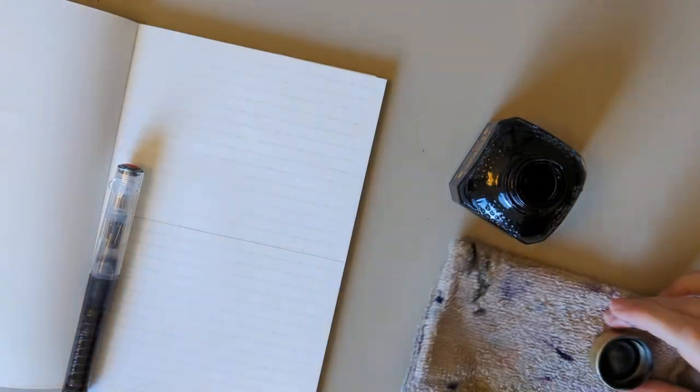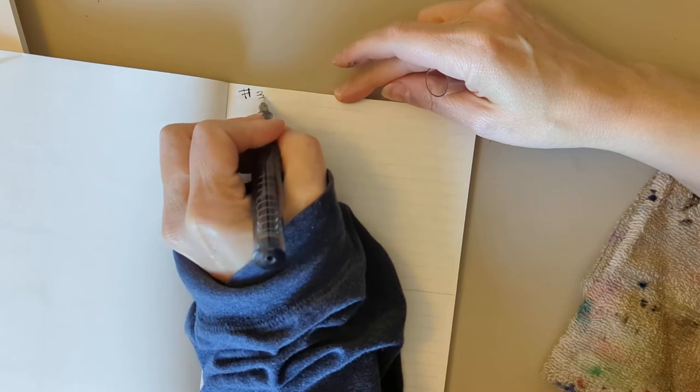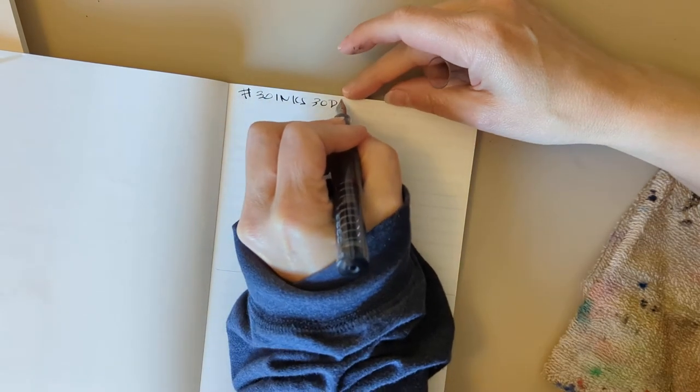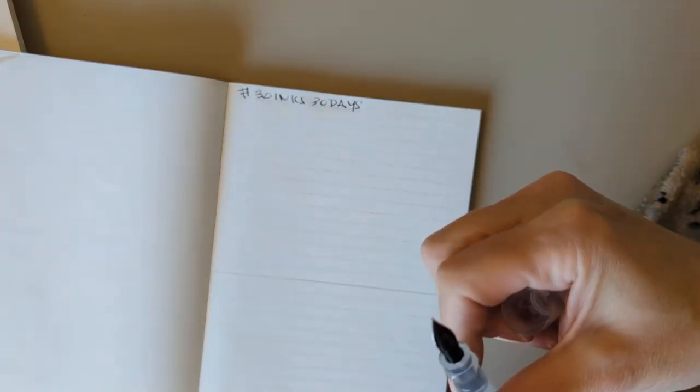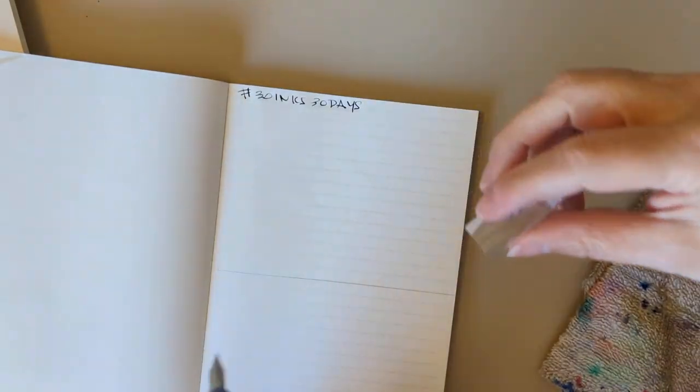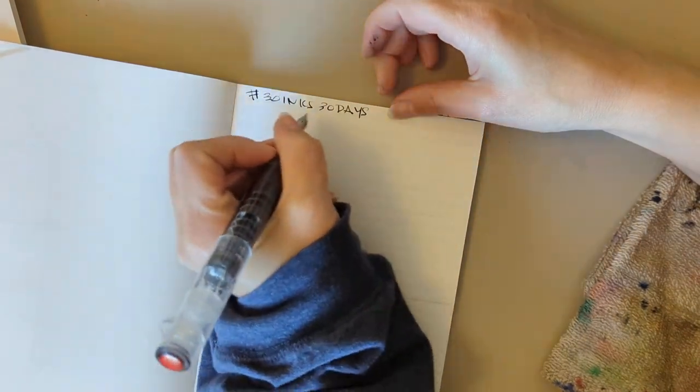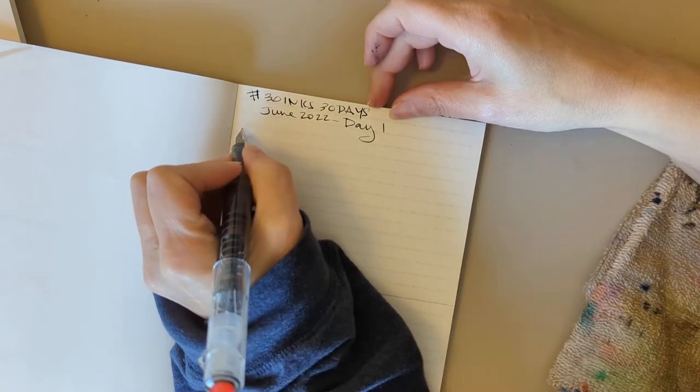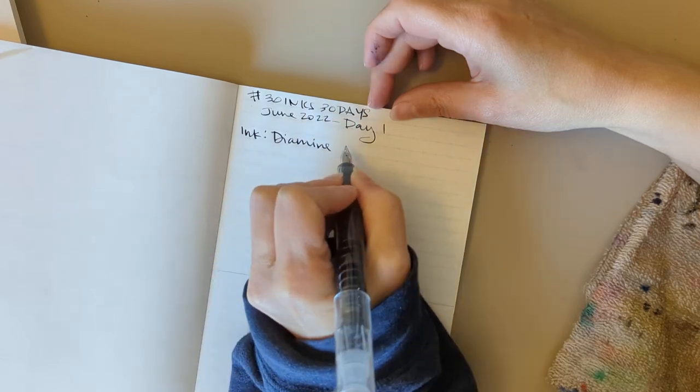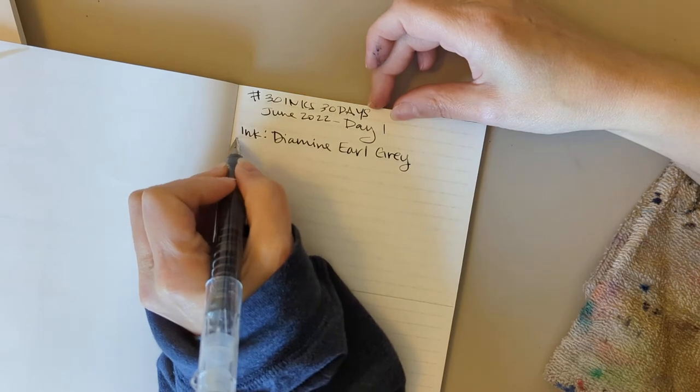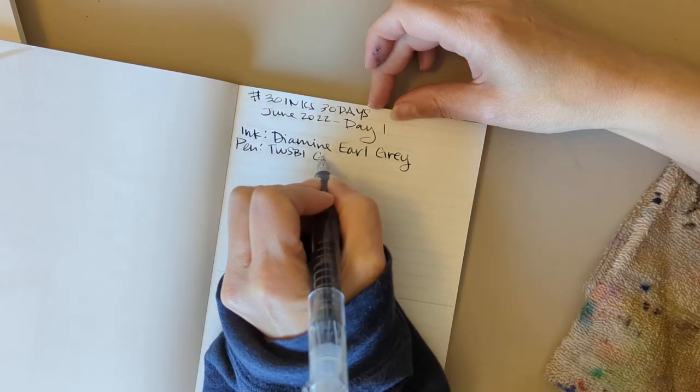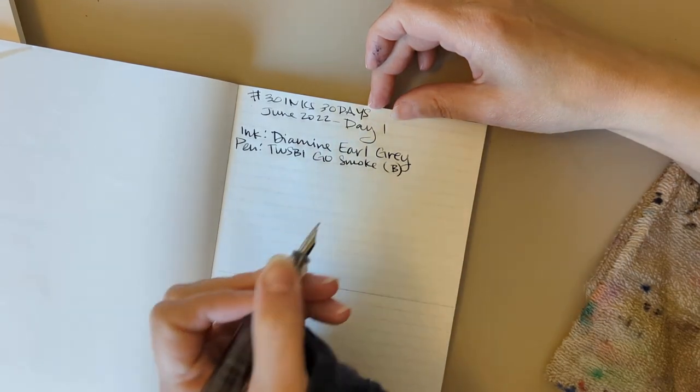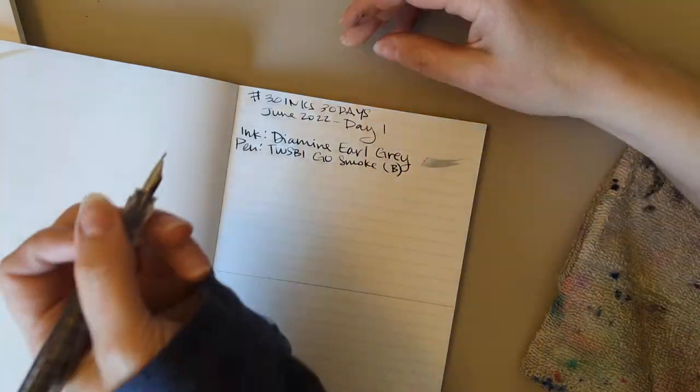Okay, I'm hoping that this is enough. Let's write this down. What does she write? She writes hashtag 30 inks 30 days. That's cool, I'll do a hashtag. Which nib is this? This should be a broad. Twisbi Go smoke, probably a broad nib. June 2022, day one, heck yeah. Okay, ink. Diamine Earl Grey. Pen.